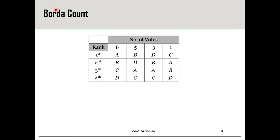Let's work through an example of the Borda count method using this preferential table. Six people ranked A as first place, B second, C third, and D fourth. Five people ranked B as first place, D as second, A as third, and C as fourth. Since there are four candidates, first place votes get 3 points, second place votes get 2 points, third place votes get 1 point, and fourth place votes get 0 points.